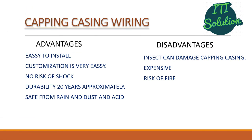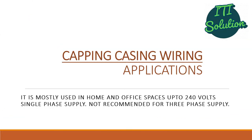Advantages of capping casing wiring are easy to install, customization is very easy, no risk of shock, durability of approximately 20 years, and safe from rain, dust, acid, etc. Disadvantages include insects can damage capping casing, it is expensive, and there is risk of fire. It is mostly used in homes and office spaces up to 240 volts single phase supply and is not recommended for three phase supply.